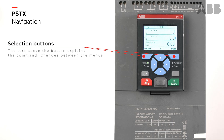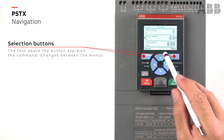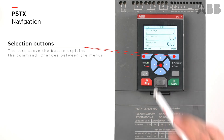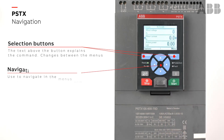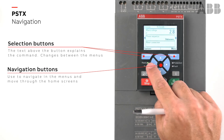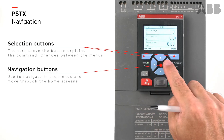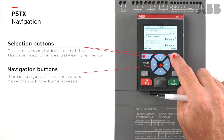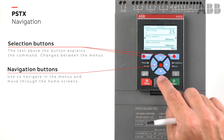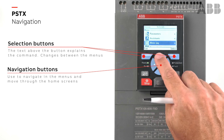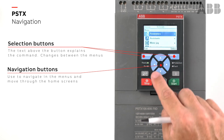Number two is the navigation buttons — the four arrow keys. We can either go sideways, or if we are in a menu, we can go up and down.